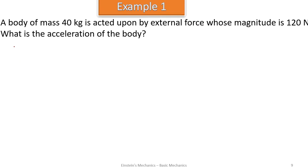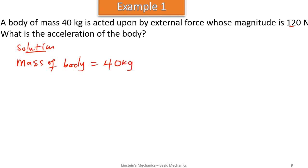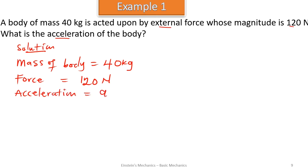Welcome back to Episode 3. Let's try our hands on some examples. A body of mass 40 kilograms is acted upon by an external force whose magnitude is 120 newtons. What is the acceleration of the body? From this question, we are given: mass of body is 40 kilograms, force is 120 newtons, and we are to calculate the acceleration.